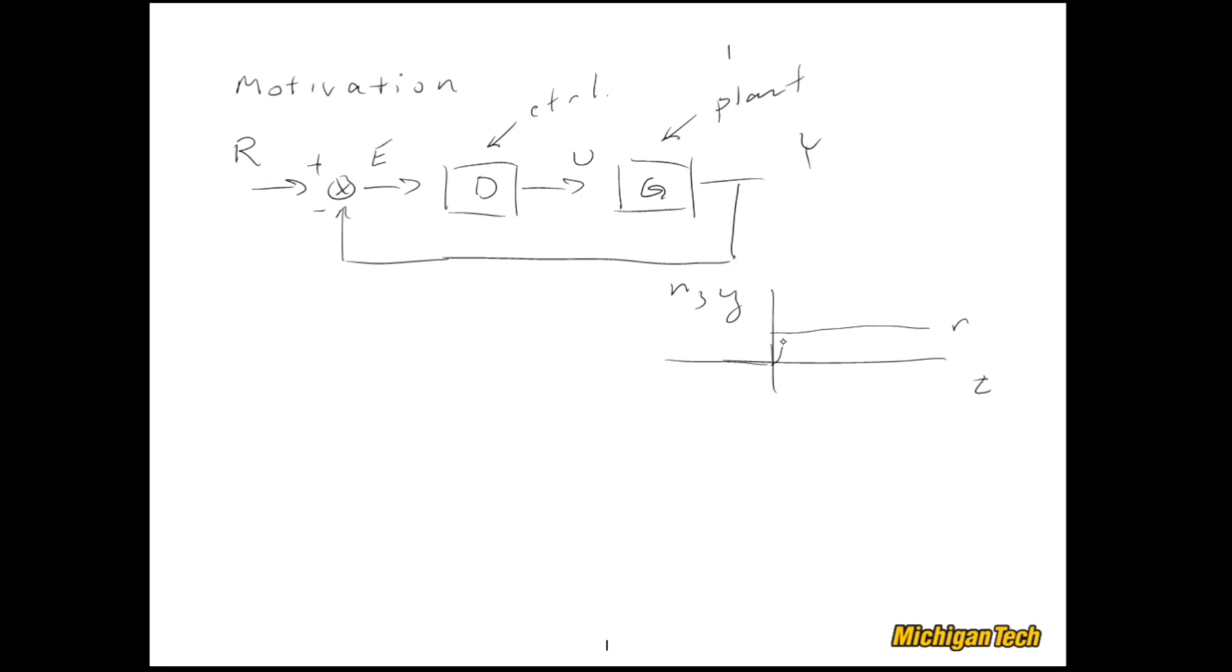What I mean by unstable is in the time domain I could have R, so I'll show both R and Y here. I could have R be a unit step, a nice bounded input, but the output Y could do something like this—wildly unstable, in this case oscillatory and growing without bound. So you always—and I'll write this down—always check stability when doing control system design.